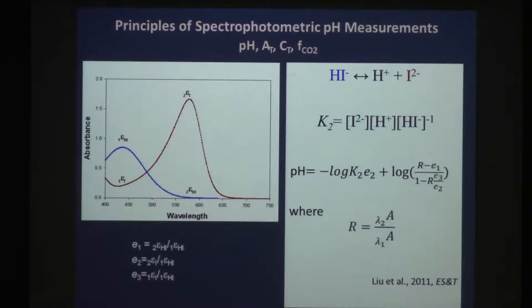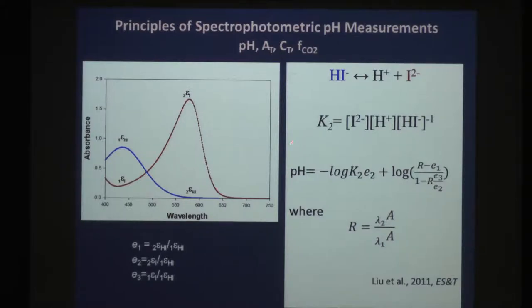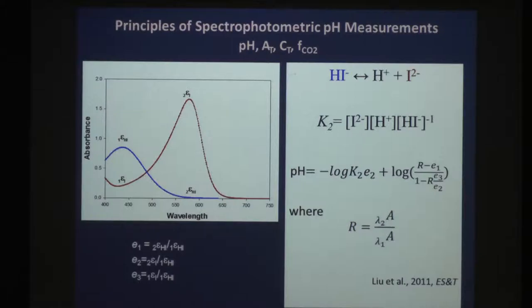To do this truly quantitatively you have to measure molar absorbance ratios — physical chemical constants that require both great precision and accuracy to achieve linear pH behavior. We then measure the equilibrium constant K₂, which is a formidable undertaking because it must be determined as a function of temperature across the full oceanic range, as well as salinity and pressure. This work has been done in the past and is still ongoing.